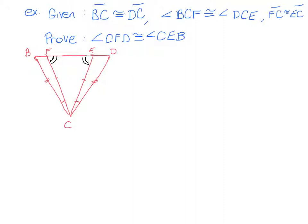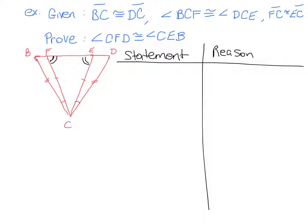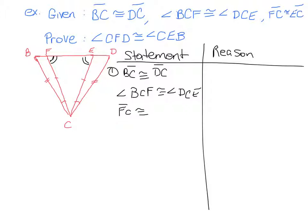When doing a two-column proof, you always want to start off with information that is given. Let's put a column for our statement and another column for our reason. We always want to start with our given information. So we know given here that BC is congruent to DC, that angle BCF is congruent to angle DCE, and that side FC is congruent to side EC. These things are not only given up here, they're also marked in our diagram.